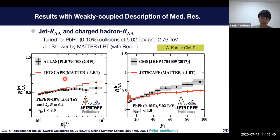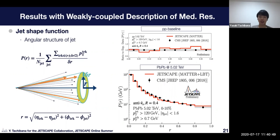I forgot to mention that in this simulation we use MATTER plus LBT with recoil. Let's move on to another very popular observable, jet shape function, to see medium response effect. Jet shape function is the distribution of PT inside or outside of the jet as a function of R. R corresponds to the angle from the jet direction.